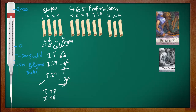Another famous proposition is 1.32, where he proves that the sum of the angles of a triangle is 180 degrees — he mentioned two right angles because at that time he didn't use degrees. He waited until 32 propositions to prove this.